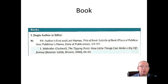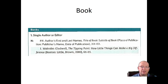When you cite a book in its footnote form, you write the author's first and last names in normal order. So Malcolm Gladwell is the author of the book. Then you write the title of the book — 'The Tipping Point' — colon, then the subtitle of the book. I'll talk a little bit more about how you can identify that later.